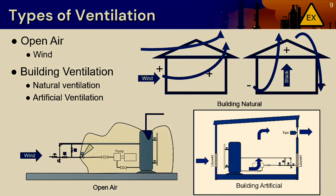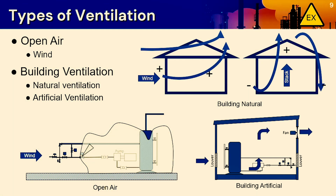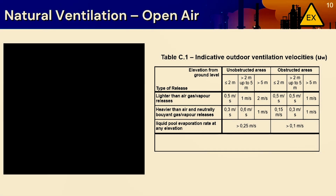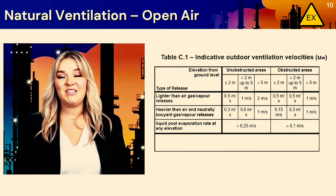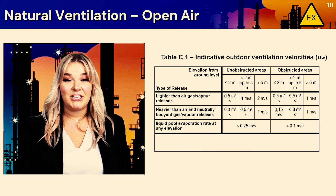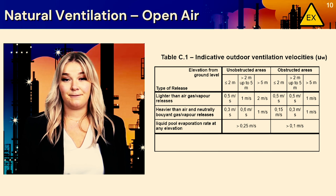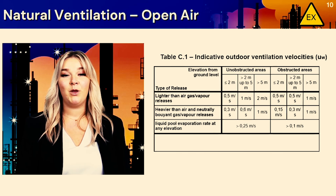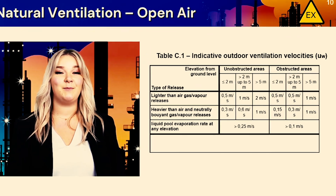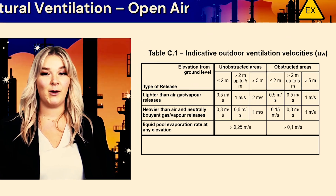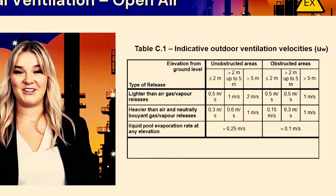Artificial ventilation is where air movement is provided by fans or extractors. To estimate the ventilation velocity for open air, we can use Table C.1 from the standard.